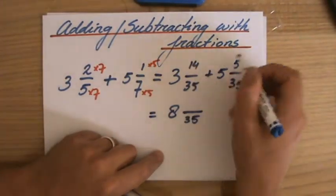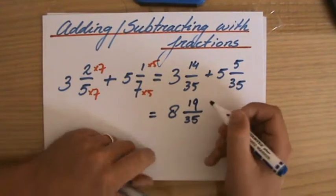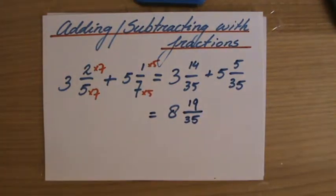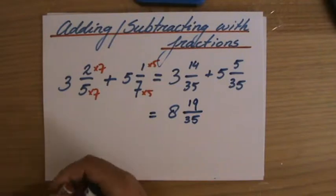How many over thirty-five? Well, fourteen plus another five, nineteen. So eight, nineteen over thirty-five is the answer.